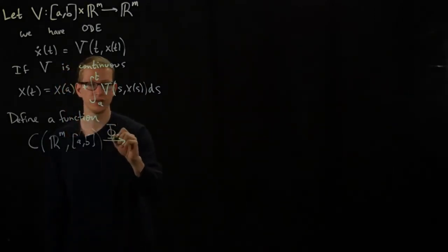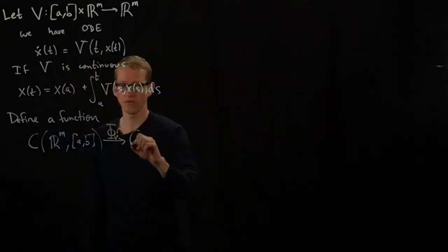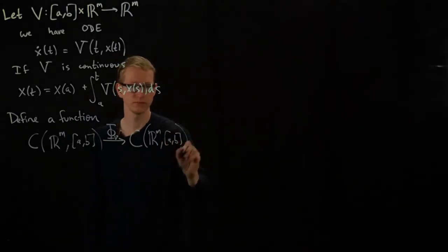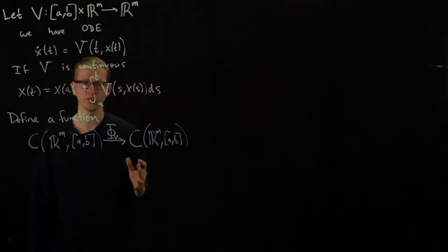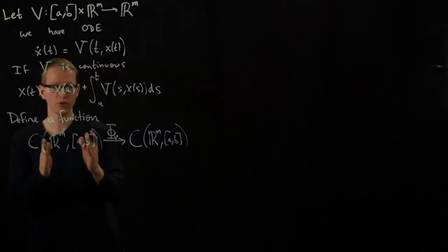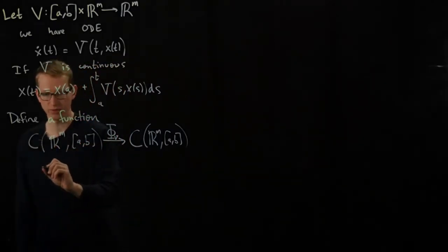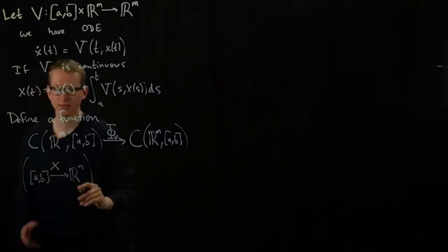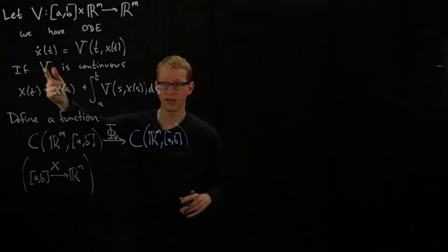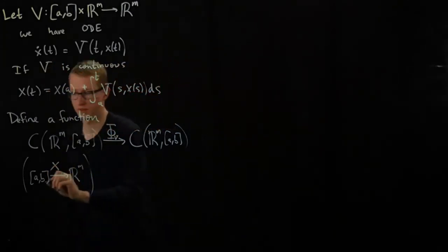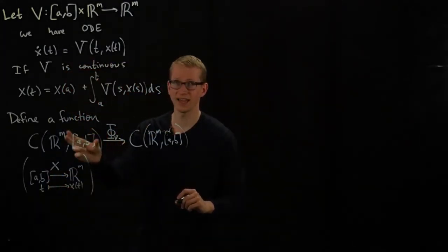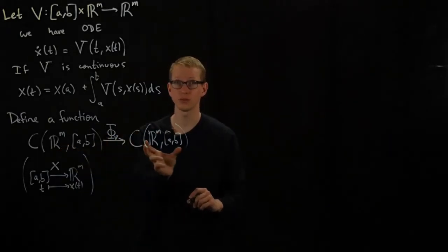So I can define a function that depends on this vector field V from this space to itself. It takes an arbitrary function from [A,B], so its input is a function x on [A,B] to R^m. It's a little meta - I have to think of this as acting on functions. It's a function that takes in a function and gives me another function back.